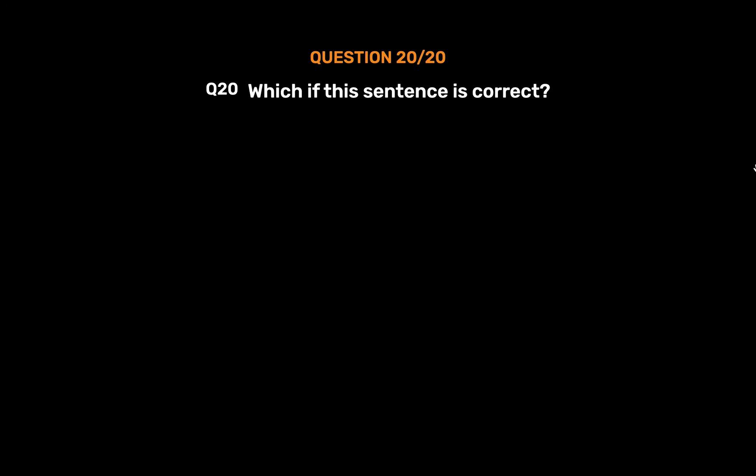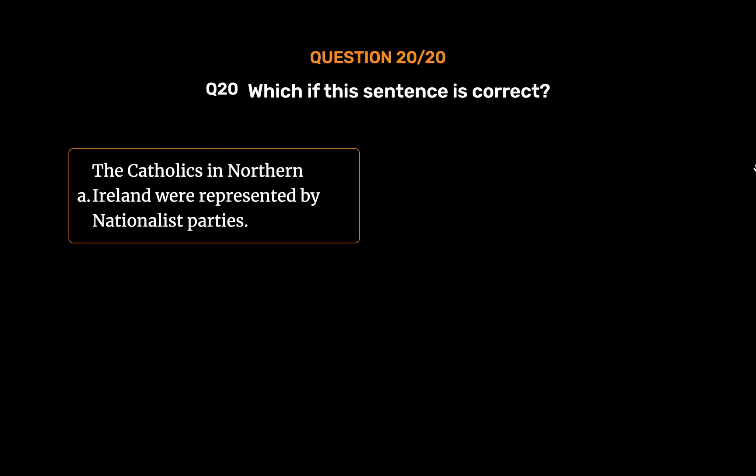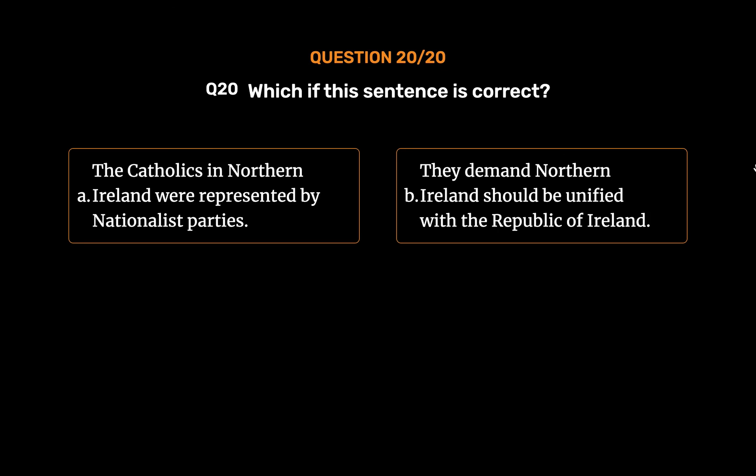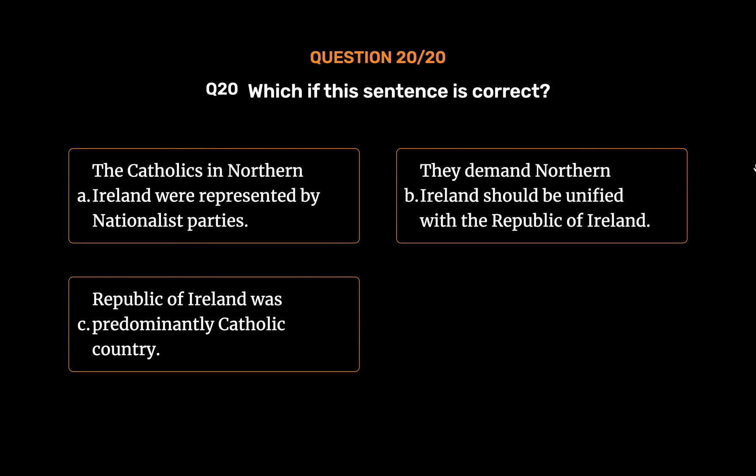Question number 20. Which of these sentences is correct? Option A: The Catholics in Northern Ireland were represented by nationalist parties. Option B: They demanded Northern Ireland should be unified with the Republic of Ireland. Option C: The Republic of Ireland was predominantly a Catholic country. Option D: All of them.